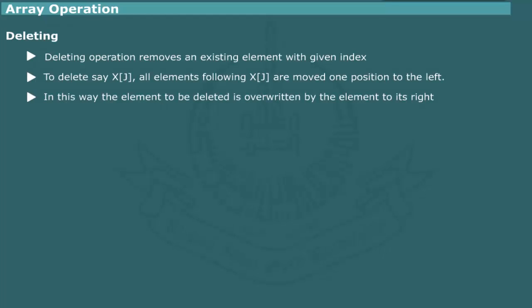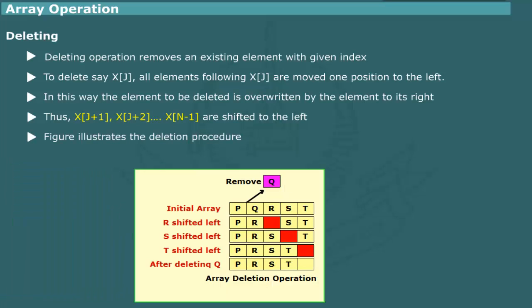Deleting. The delete operation removes an existing element from the array. In order to delete an element, say xj, we simply move all elements after xj one position to the left. In other words, elements x[j+1], x[j+2], up to x[n-1], where n is the array size, are shifted to the left.